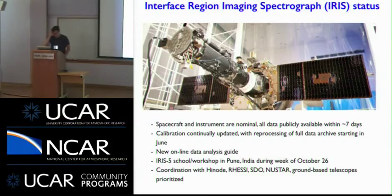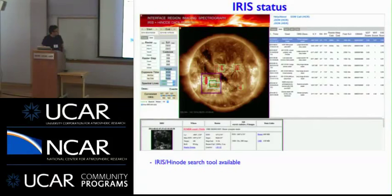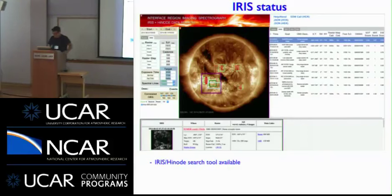In terms of operations, we've now really moved on to coordinating with a lot of other missions. There's an IRIS-HINODE search tool available now that allows you to look at the usual IRIS data sets and also figure out if you want to get a dataset that's co-spatial and simultaneous with SOT, XRT, or EIS on HINODE. The search results show you tabs for IRIS and then for the other HINODE instruments. This is still being developed so comments are very welcome; Ryan Tummins is spearheading this at Lockheed.